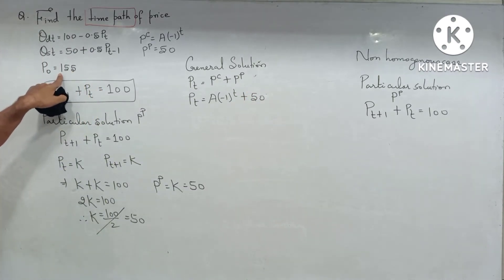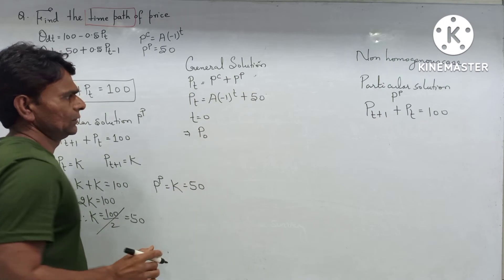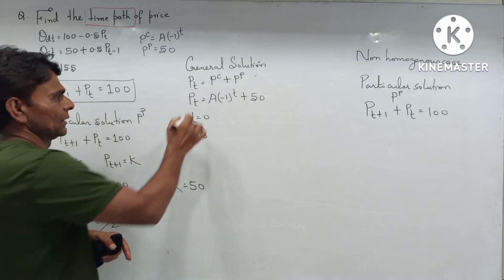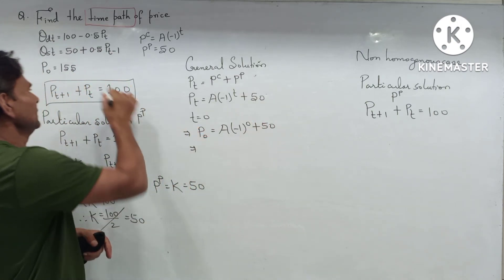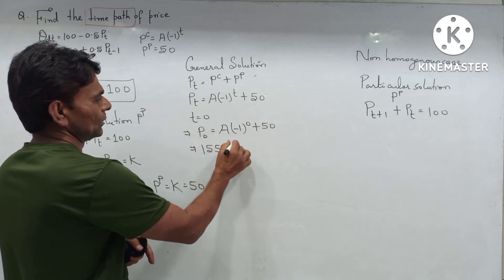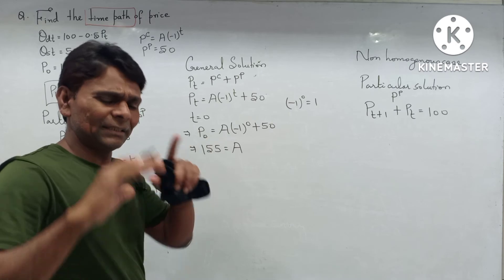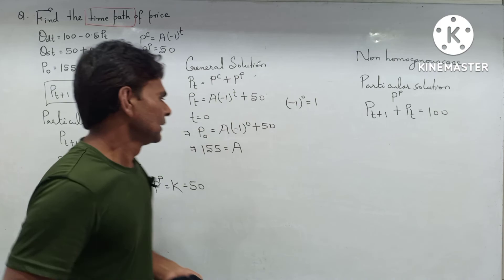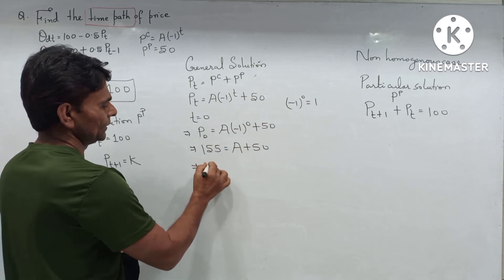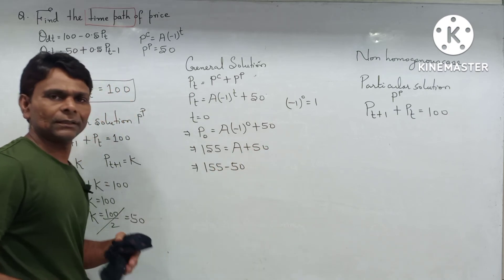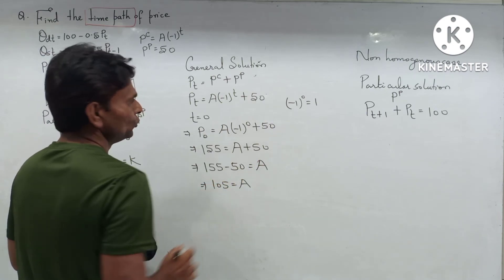Now, applying the initial condition given in this question: p(0) = 155. Putting t = 0 in the general solution: p(0) = A·(-1)^0 + 50. Since any number raised to the power 0 equals 1, this becomes 155 = A·(1) + 50. Shifting 50 from the RHS to the LHS: 155 - 50 = A, therefore A = 105.